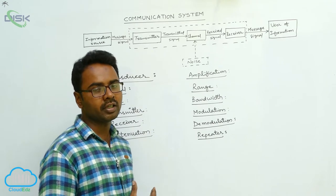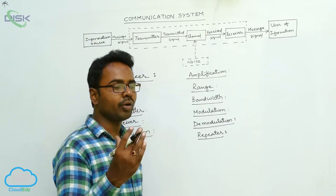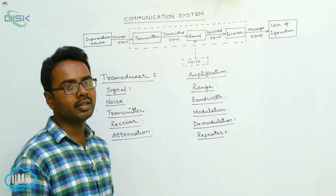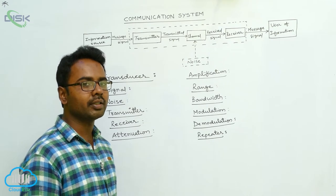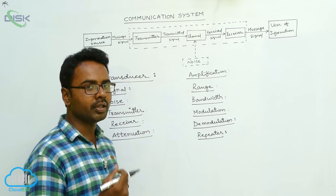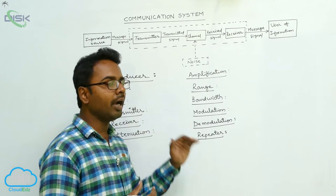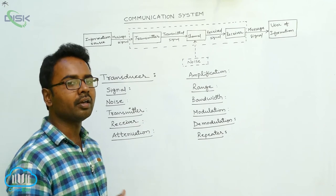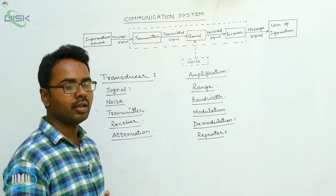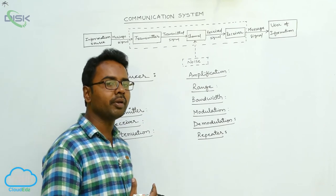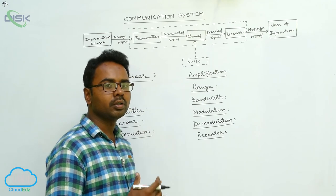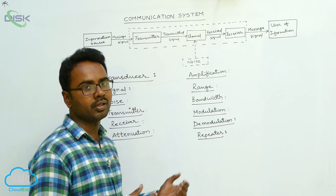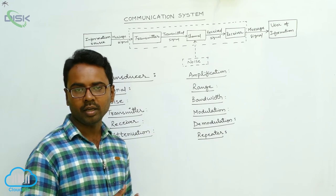Whenever transmitted signals pass through the channel, they are attenuated. Attenuation means they lose their strength. Because of this, these signals are received by the repeater, which amplifies the signal and re-transmits to the receiver. For long-distance communication, we use repeaters to compensate for the attenuation produced in the signals when transmitted through the channel.